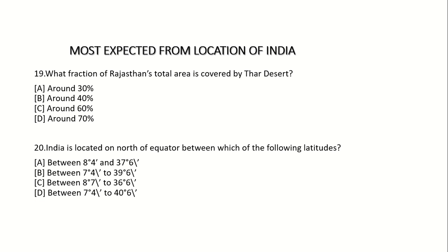19th question: What fraction of Rajasthan's total area is covered by the Thar Desert? Option A: Around 30%. Option B: Around 40%. Option C: Around 60%. Option D: Around 70%.